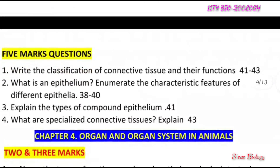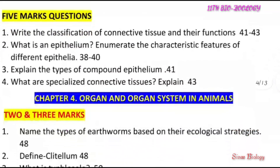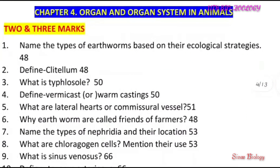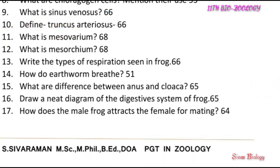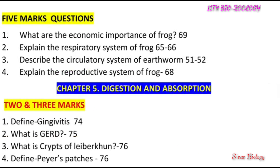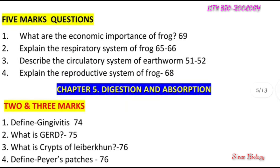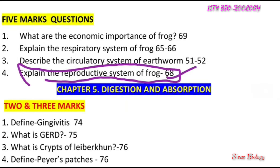Chapter 4, question number 13: types of respiration seen in frog. Also important: explain the reproductive system of frog — both male and female — question number 17.